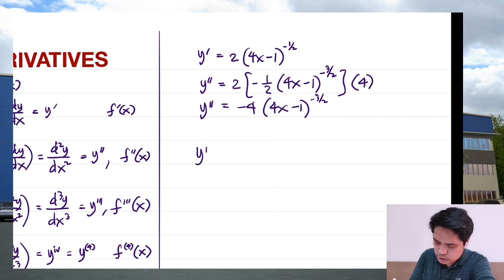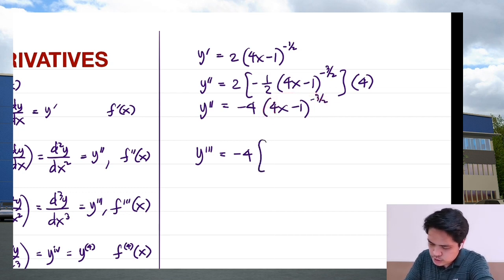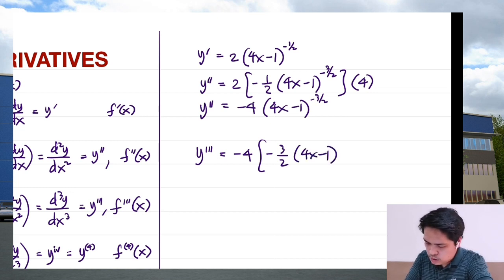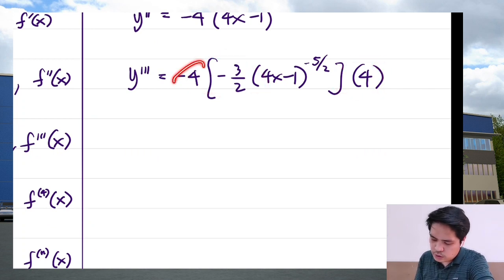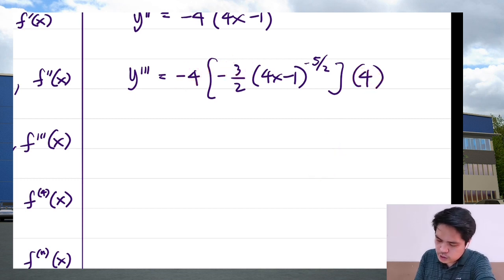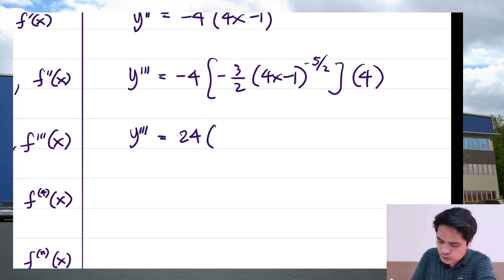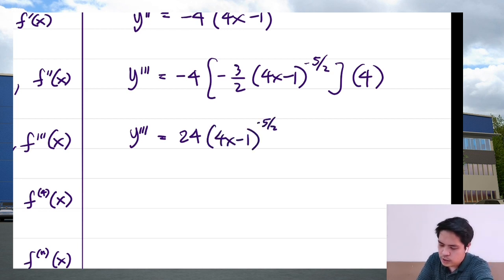Now we proceed to y triple prime. That would be −4 times the derivative of (4x − 1)^(−3/2), which is (−3/2)(4x − 1)^(−5/2) times 4. Multiplying: −4 times −3/2 times 4 gives 48/2 = 24. Negative times negative is positive, so y triple prime = 24(4x − 1)^(−5/2). You may also express the answer in radical form.